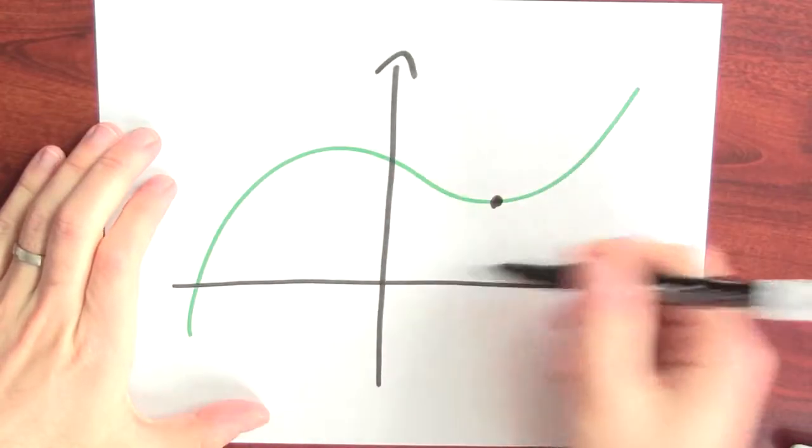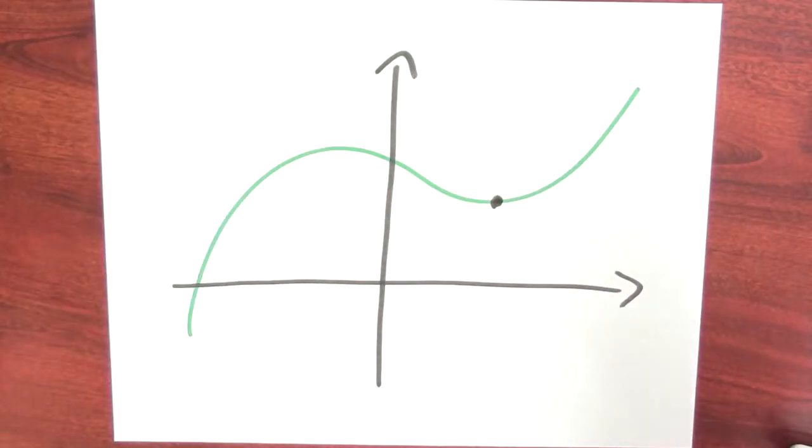People have the idea that a local minimum means the function decreases and then increases. Here's a local minimum on the graph of this random function. And the misconception is that they all look like this.